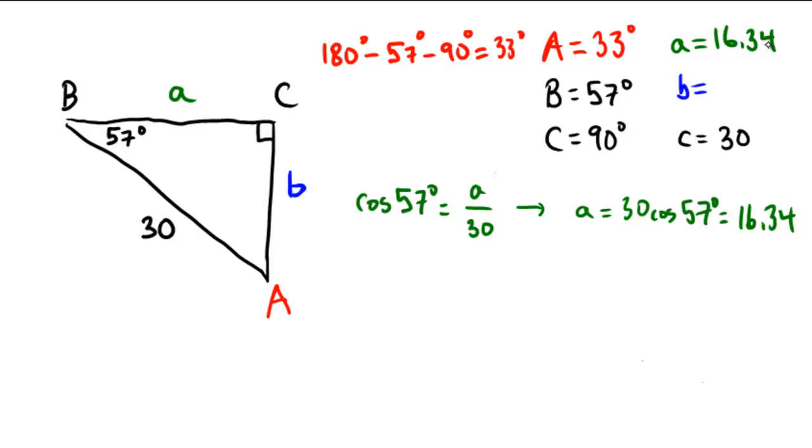And then for our last side. Again, we could use the Pythagorean theorem if we wished, but since we're rounding side A, I'm going to choose to bring out a trig function here. I know the hypotenuse, I want the opposite this time. So I'm going to choose to use a sine function. Sine of 57 degrees is going to be the opposite side, which is B, over the hypotenuse of 30. And so therefore B would be equal to 30 sine of 57 degrees. And 30 sine of 57 degrees is 25.16.